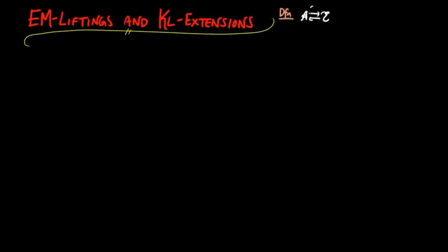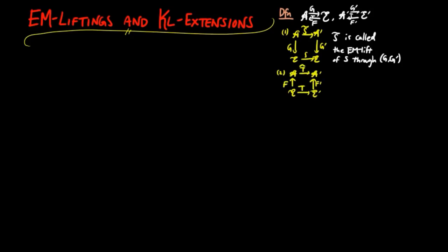Given a joint situation's FG and F'G', then 1. If the following is a commutative diagram of functors, then S tilde is called the Eilenburg-Moore lift of S through the joint functors G and G'. And 2. If the following is a commutative diagram of functors, then T hat is called the Kleisle extension of T through the coadjoint functors F and F'.